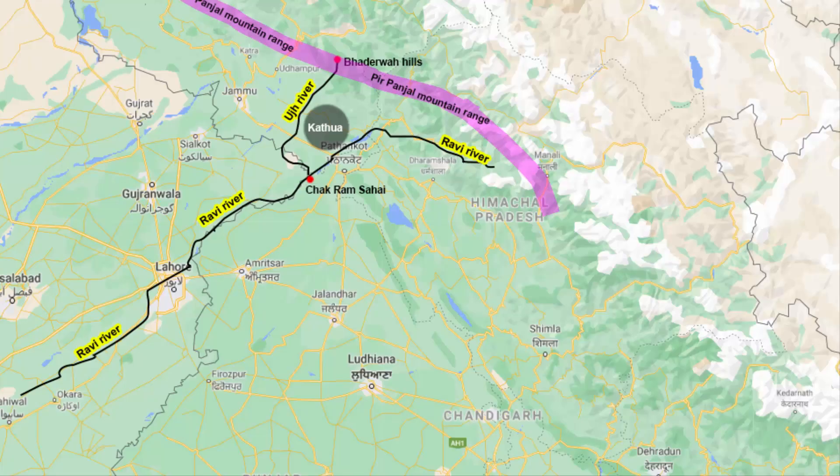If a dam is to be constructed, it needs to be built at a higher elevation to tap into more gravitational potential energy. So the dam will be built closer to the Uj river's place of origin.